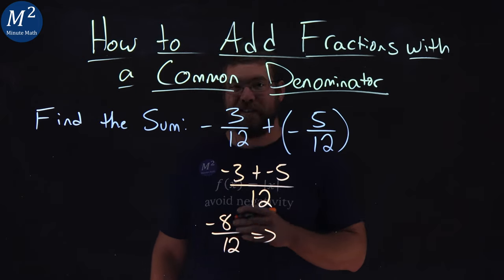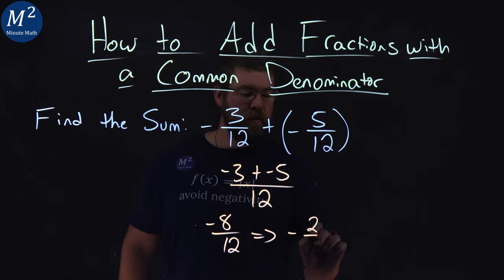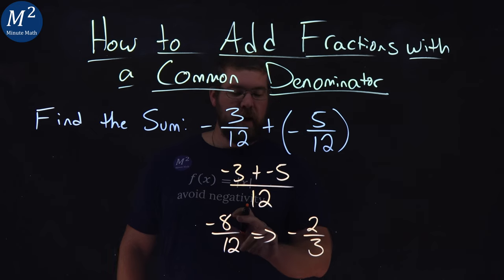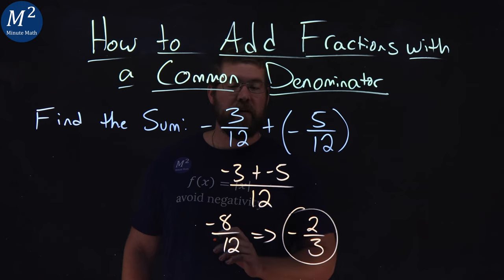Negative 8 over 12 simplifies as they're both divisible by 4. So negative 2 over 3. 8 divided by 4 is a 2. 12 divided by 4 is a 3. And there we have it.